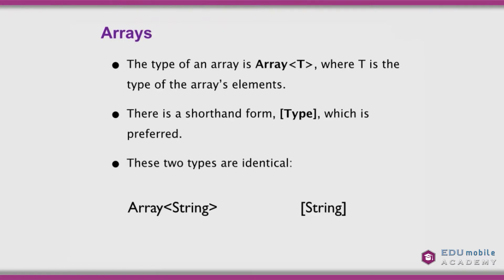So we're concentrating on arrays. The type of an array is Array<T>, where T is the type of the array's elements. There is a shorthand form where we just wrap the type in brackets, and this is the preferred form for coding in Swift. The two types — Array<String> and [String] — are identical, and we'll use the bracket form going forward.